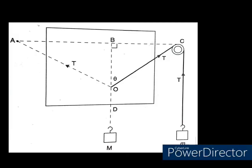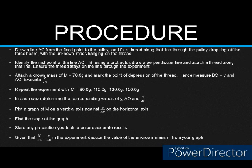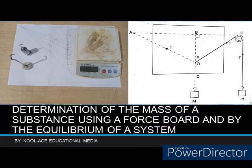The precautions are straightforward. You would have to avoid any form of draught during the experiment and then ensure that the mass is not leaning on any table, is not leaning on the force board whatsoever. Also I avoided parallax error in reading the meter rule or the protractor during the experiment.